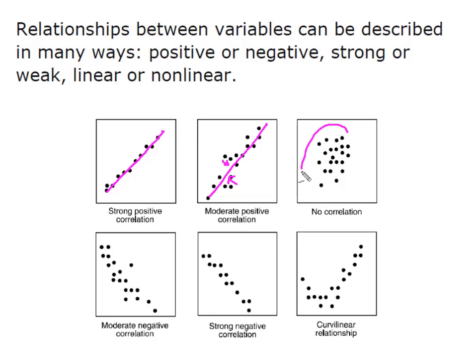When we get this kind of scatter pattern that looks kind of like a shotgun, we'll say that there's no correlation between the two variables. When we have a pair of variables going in this direction, we consider that to be a negative correlation. And at some point in your statistics career, you may come across these curvilinear relationships.